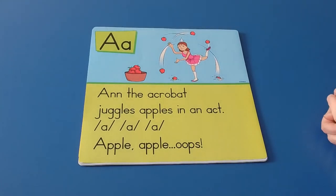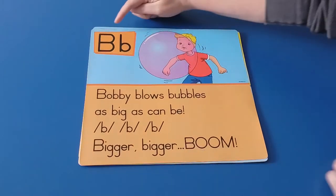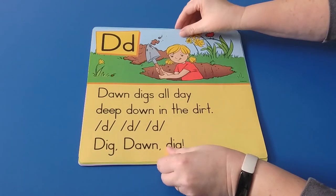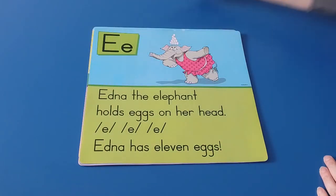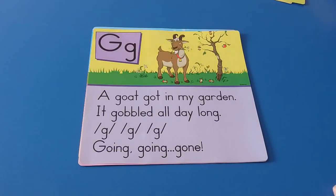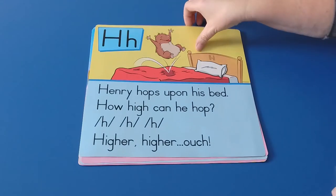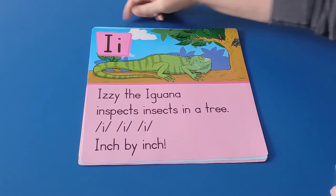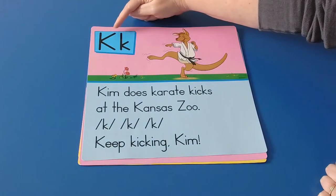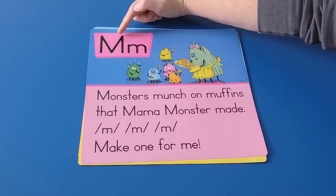It's time for alphabet cards. Are you ready? Try to say the letters with me. Big A little a, big B little b, big C little c, big D little d, big E little e, big F little f, big G little g, big H little h, big I little i, big J little j, big K little k, big L little l, big M little m.